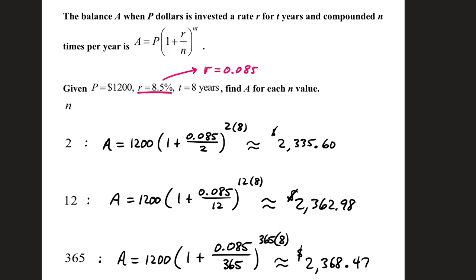The balance A when P dollars is invested at a rate R for T years and compounded N times per year is given by the formula A equals P times quantity 1 plus R over N to the N times T power.